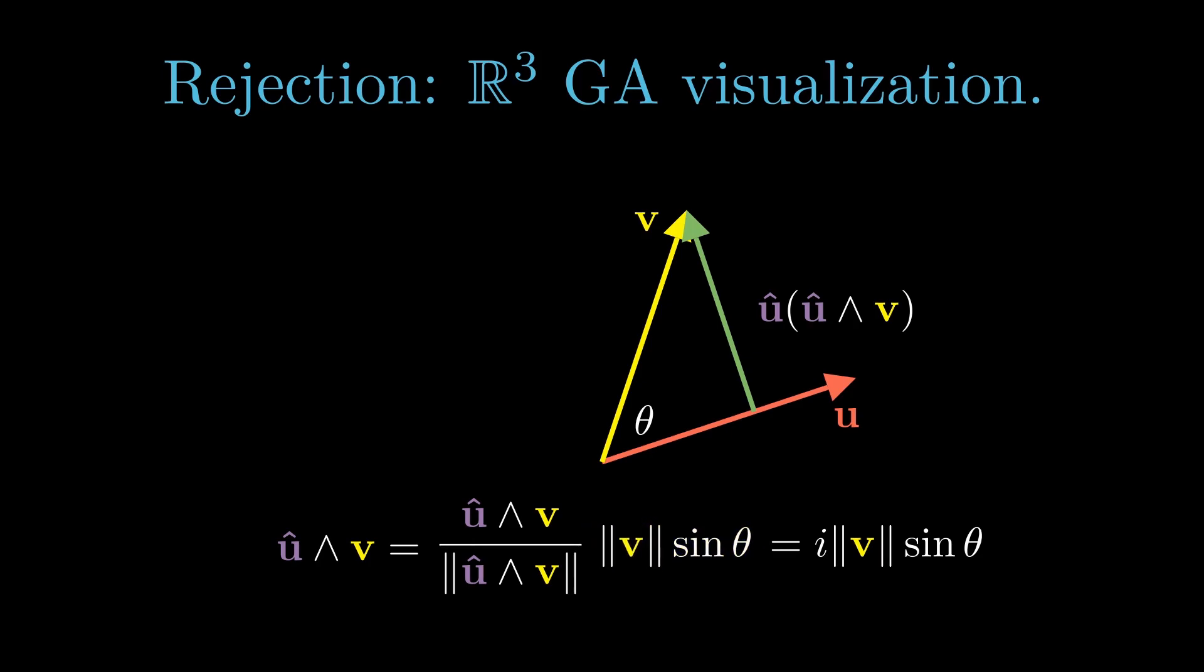The actions are: first rescale u to unit length, producing u hat. Next, multiply u hat with i from the right to rotate u hat towards v by 90 degrees. Finally, rescale the rotated u hat by the length of v times sin theta to produce the rejection.